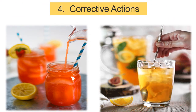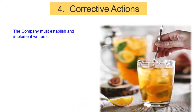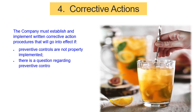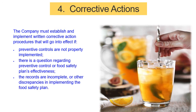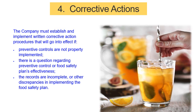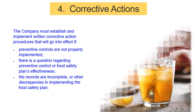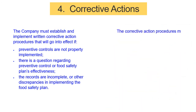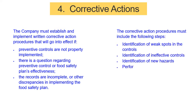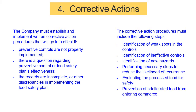Step 4: Corrective Actions. The company must establish and implement written corrective action procedures that will go into effect if preventive controls are not properly implemented, if there is a question regarding the food safety plan's effectiveness, or if records are incomplete or other discrepancies arise. The corrective action procedures must include: identification of weak spots in the controls, identification of ineffective controls, identification of new hazards, performing necessary steps to reduce the likelihood of recurrence, evaluating the processed food for safety, and prevention of adulterated food from entering commerce.